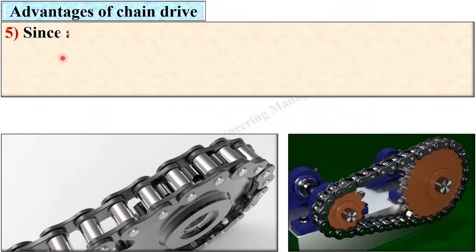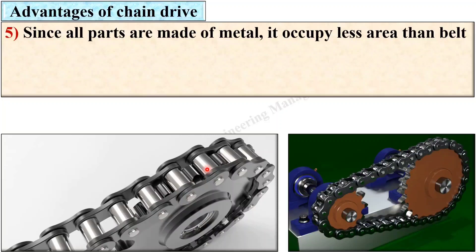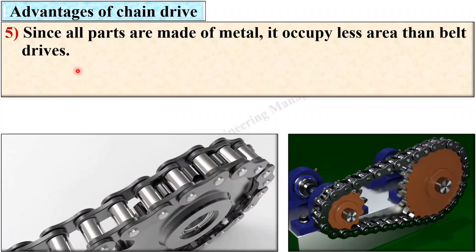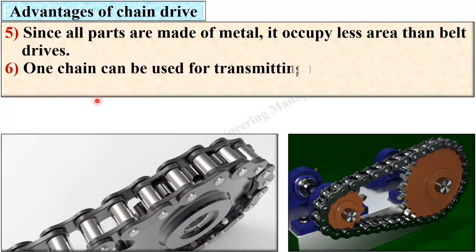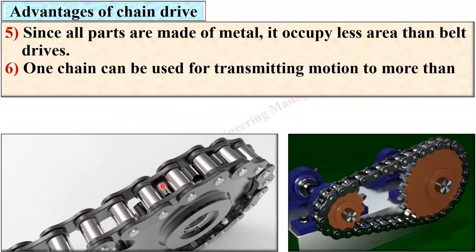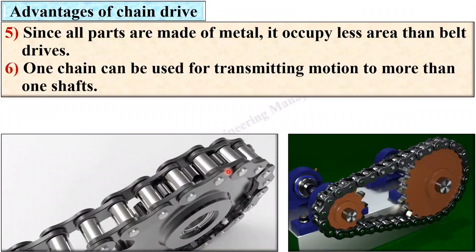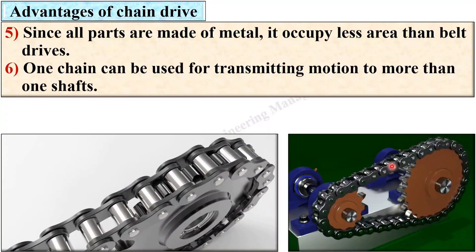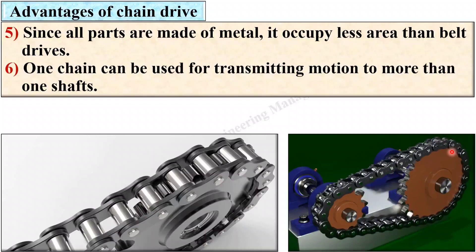Since all parts are made of metal, it occupies less area than the belt drive. Last one, one chain can be used for transmitting motion to more than one shaft. So you can use this chain to transmit motion to more than one shaft.